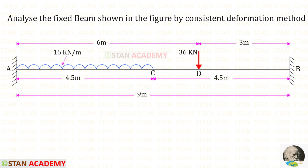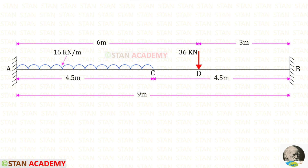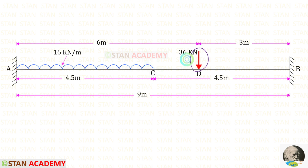Hello everyone. Today we are going to analyze this fixed beam by the consistent deformation method. The span of the beam is given as 9 meters. In the beam there is a uniformly distributed load of 16 kilonewton per meter acting in the left half. Then there is a point load of 36 kilonewton acting at a distance of 6 meters from the left support.